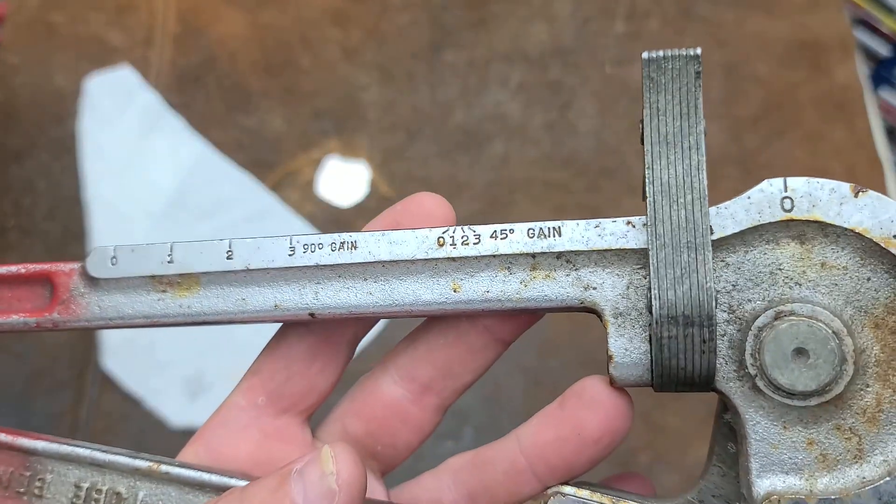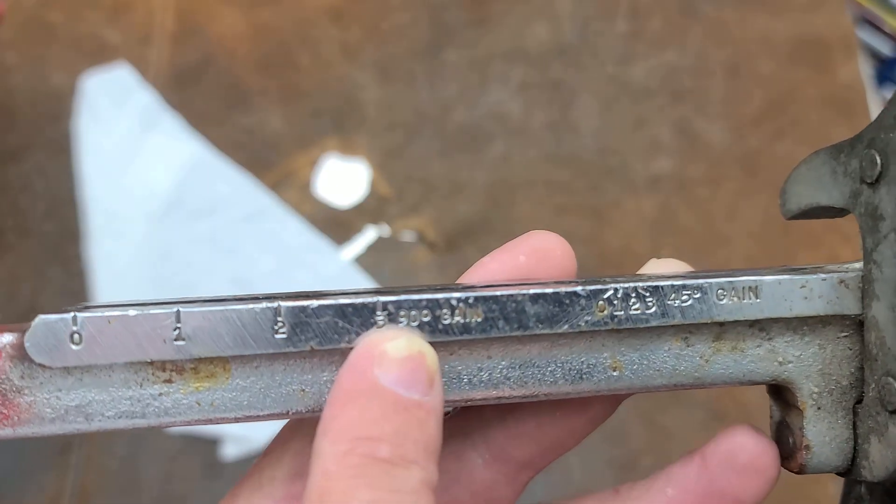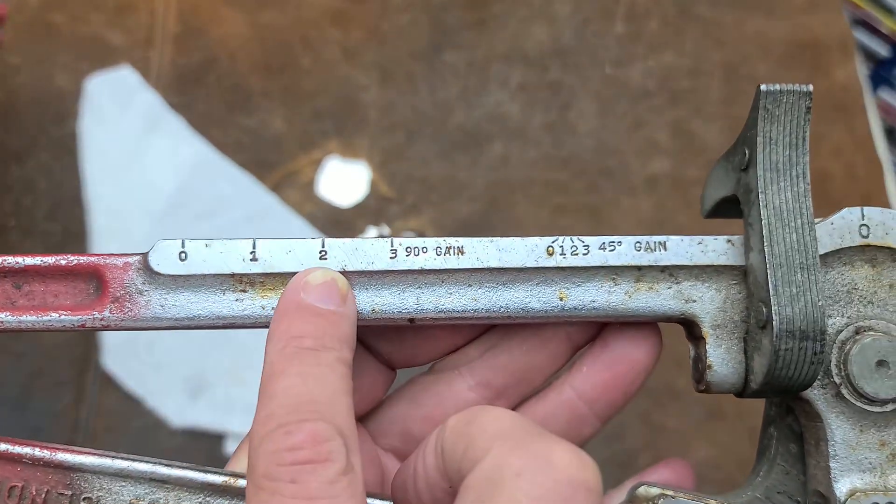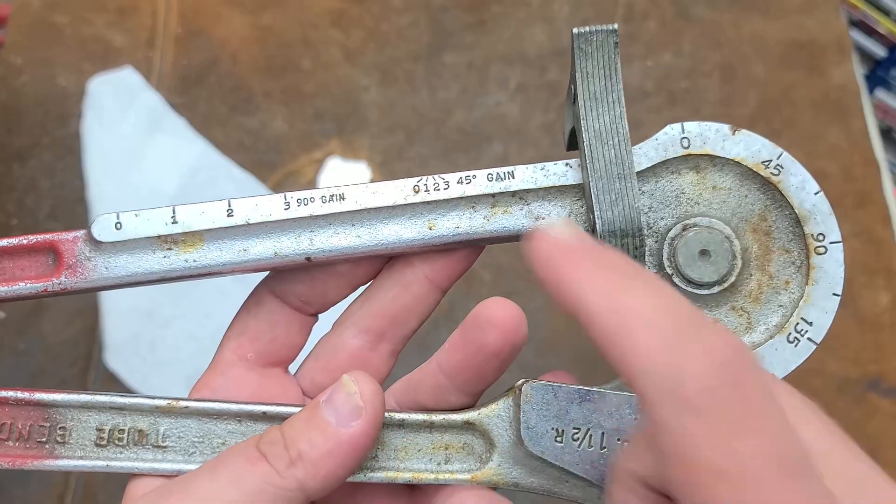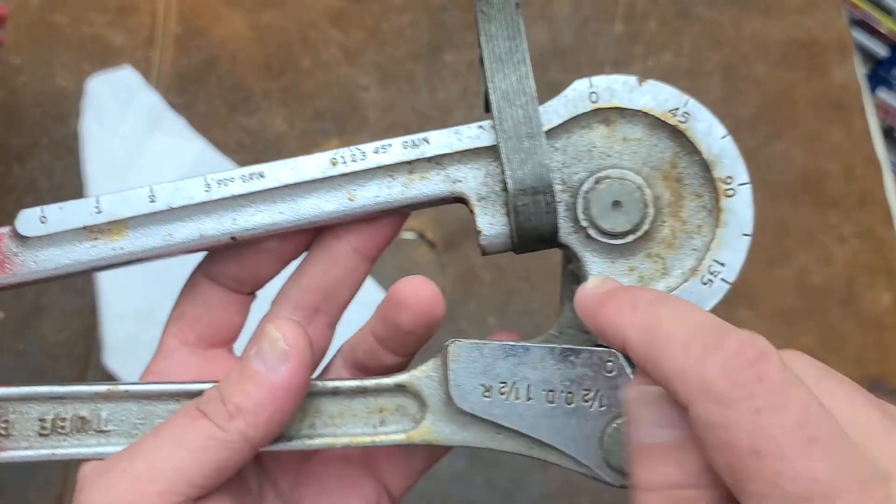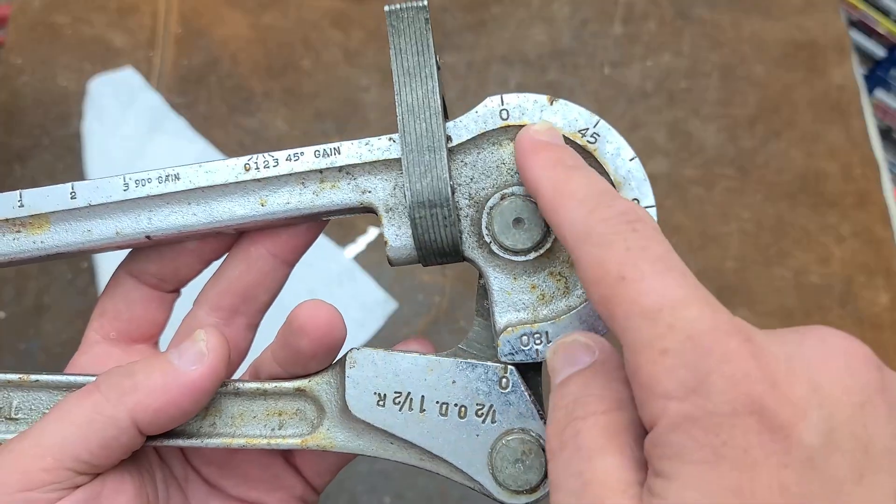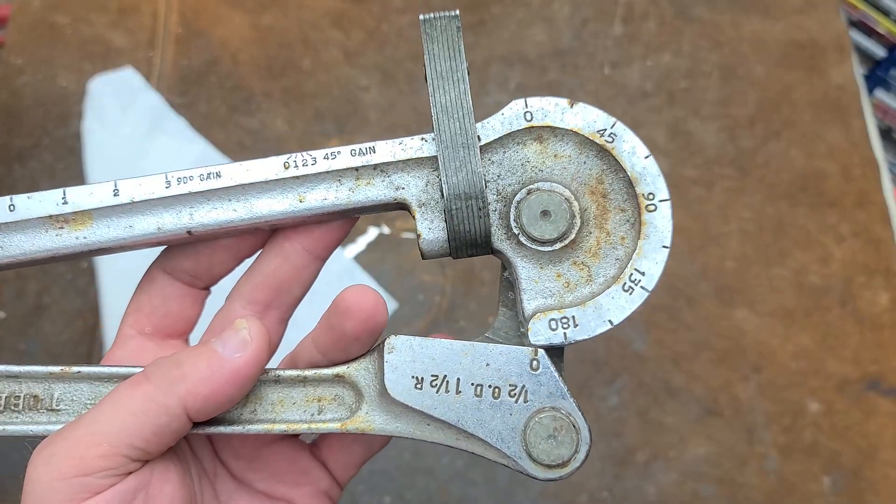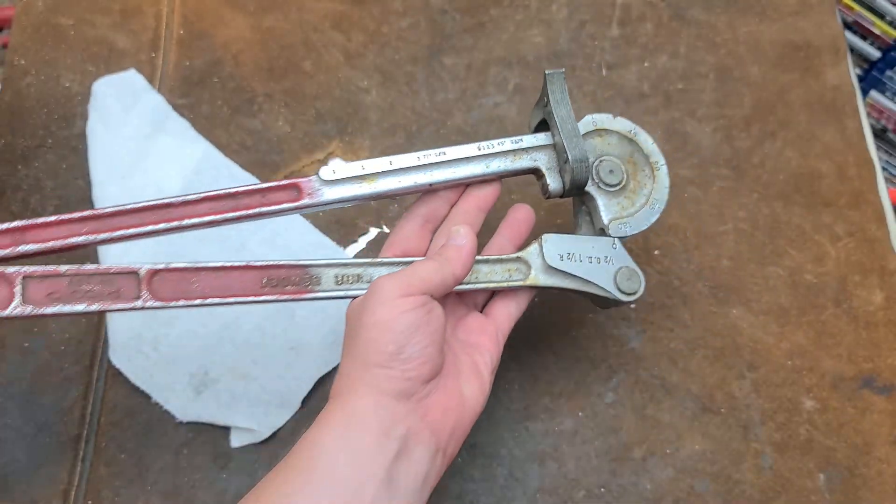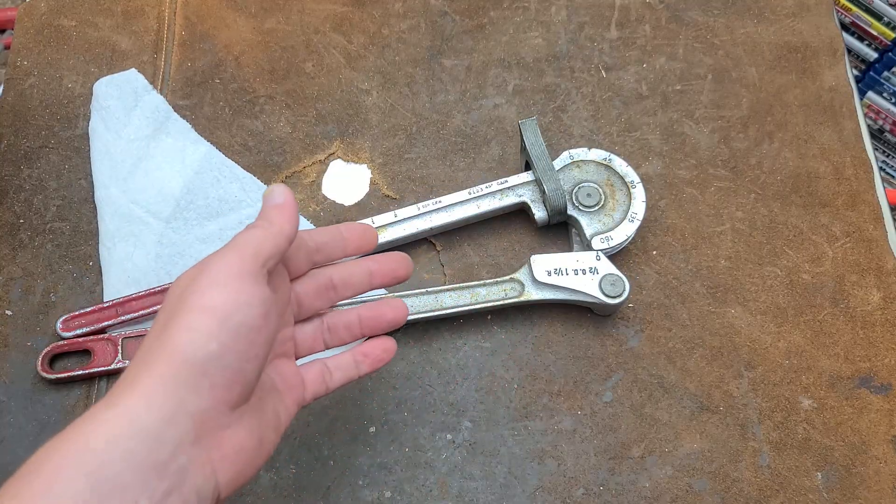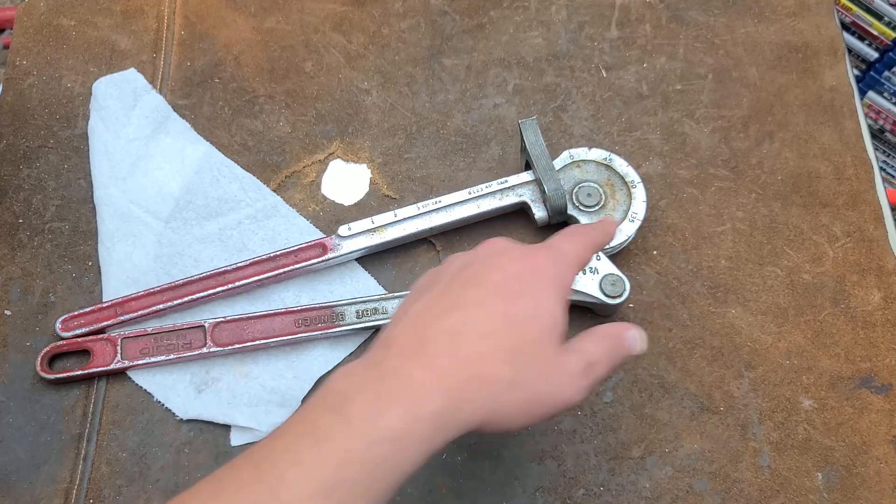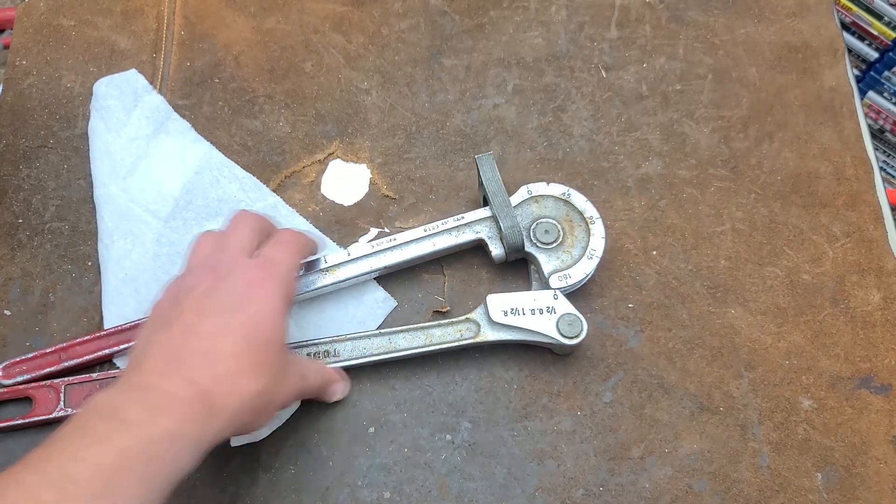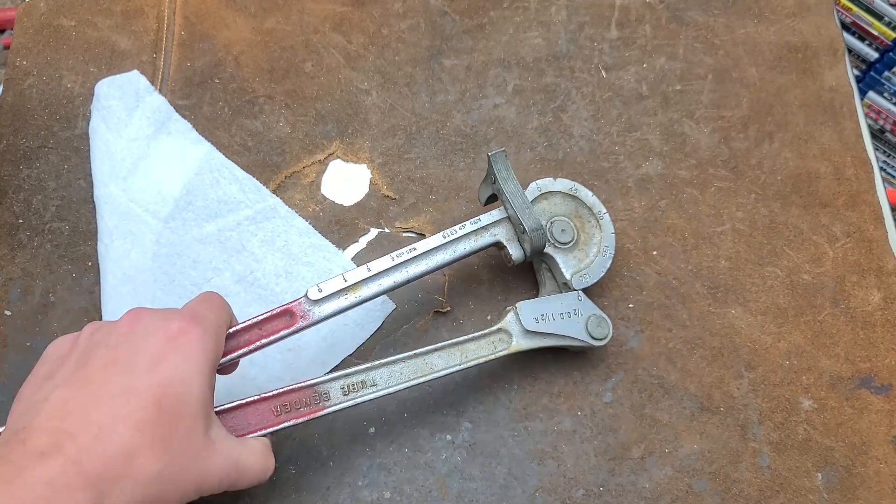The purpose of this scale here, called a gain scale, is so that you can determine how many inches of tubing it's going to take to go around a particular angle, whether it's 45 degrees or 90. This scale is there to help you just make that determination so you can compensate for the length of the arc itself.